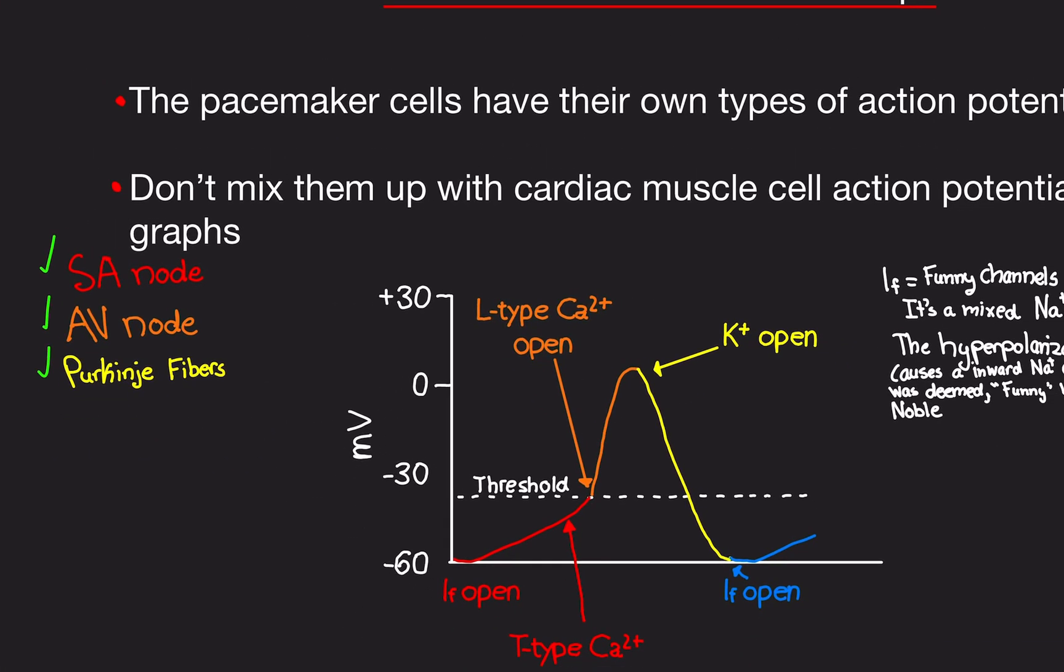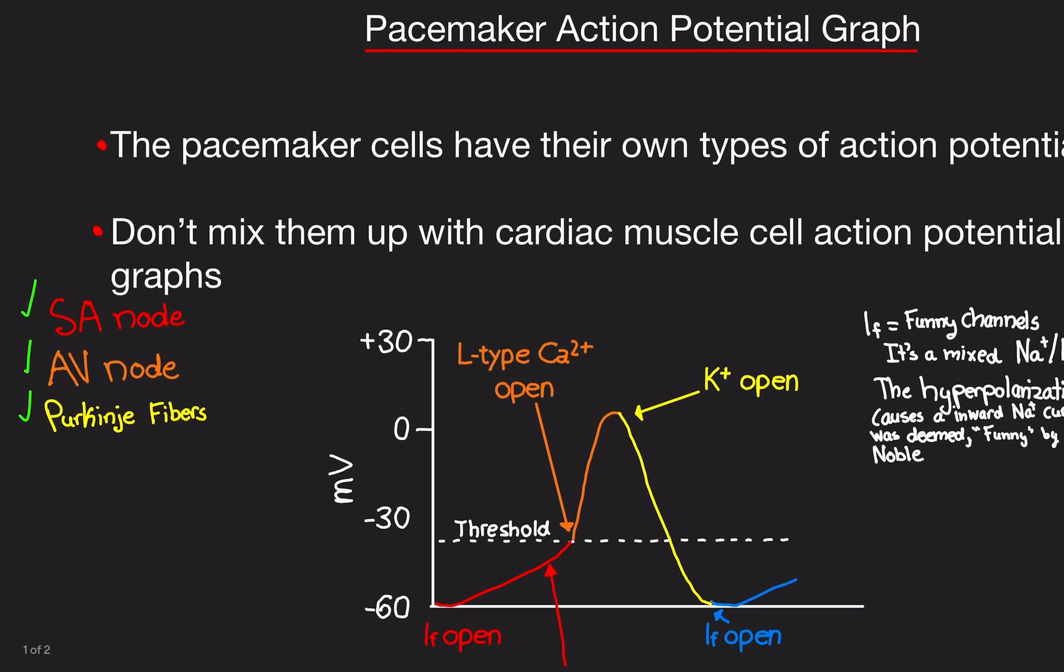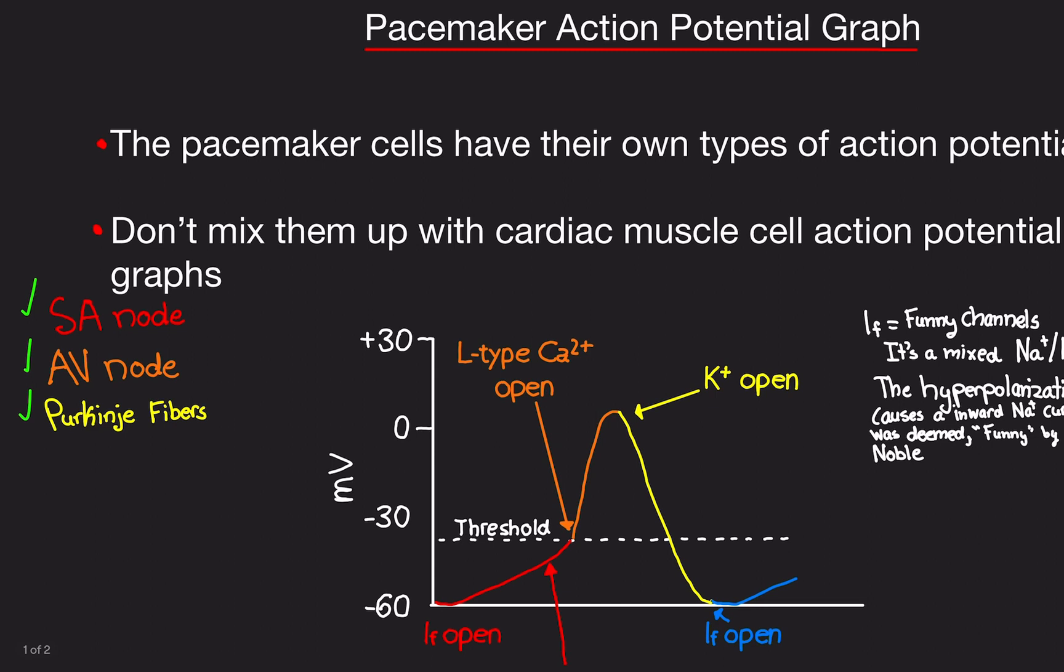So it's really important you don't mix up the cardiac muscle action potential graph and the pacemaker action potential graph. They're two different things. So what we're looking at here is the action potential fired from that pacemaker, that SA node, that AV node, or Purkinje fibers.